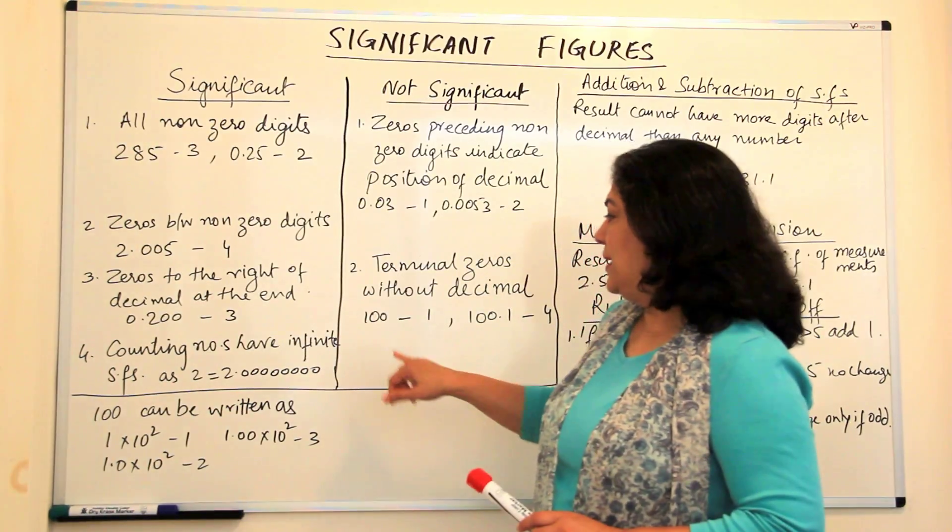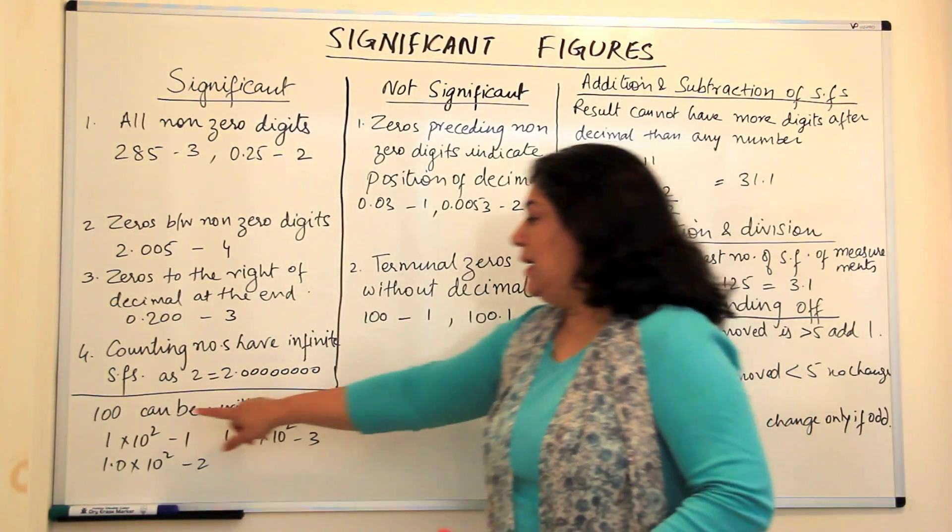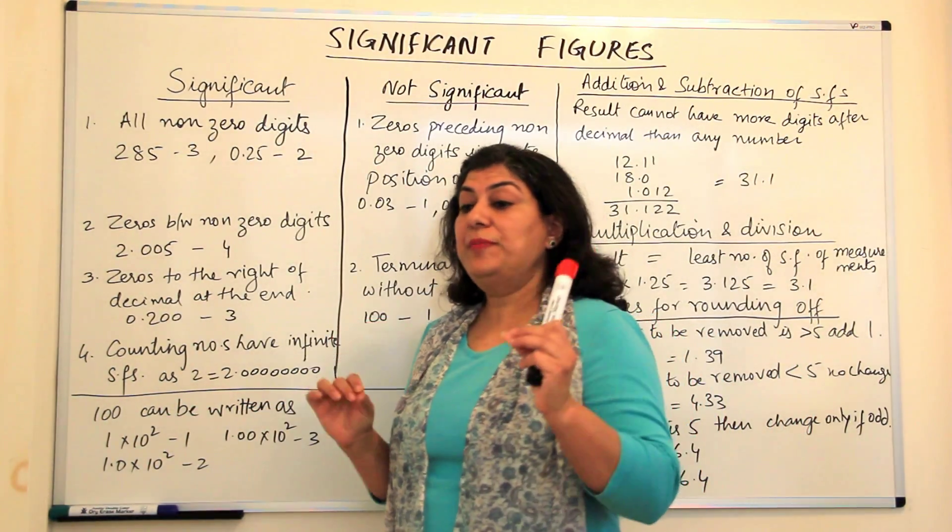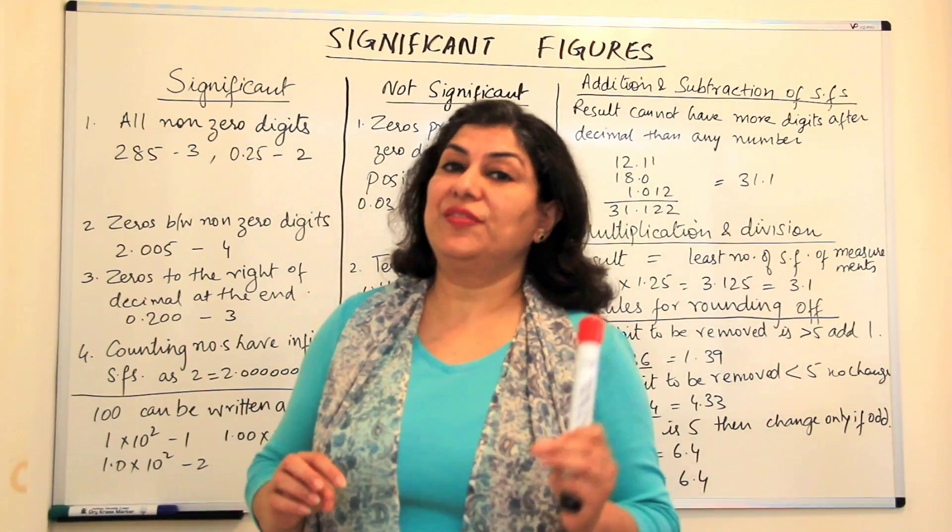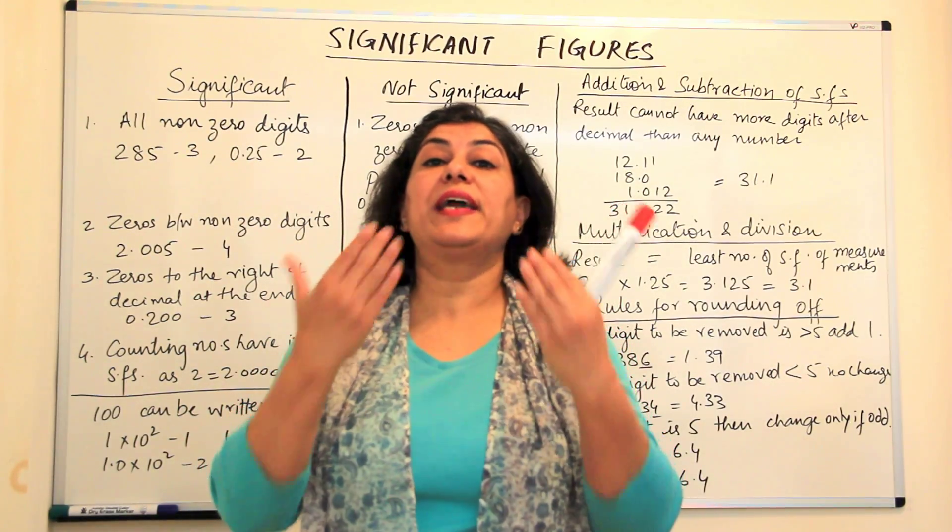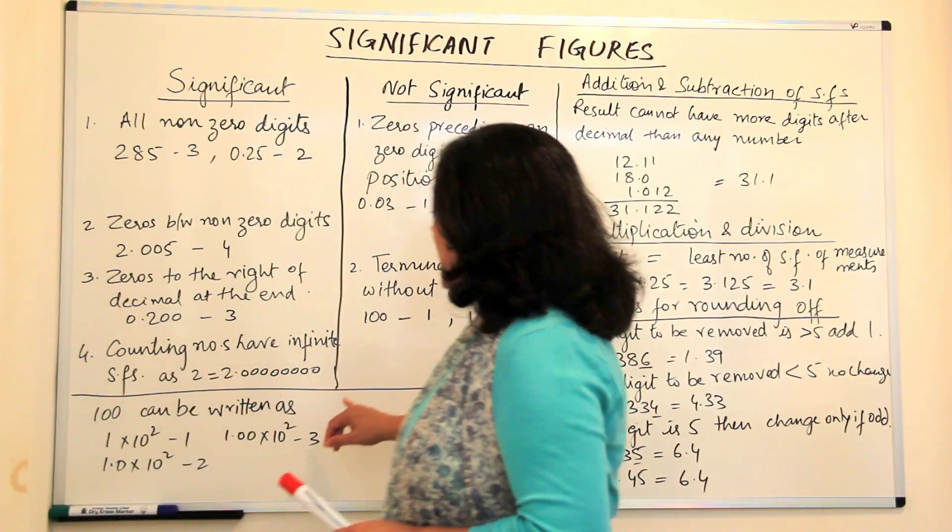Whenever you have readings like this, like 100, it would be preferable to write such readings in scientific notation to express how accurate your reading is. For example, if this was only 100 and these zeros were not significant,